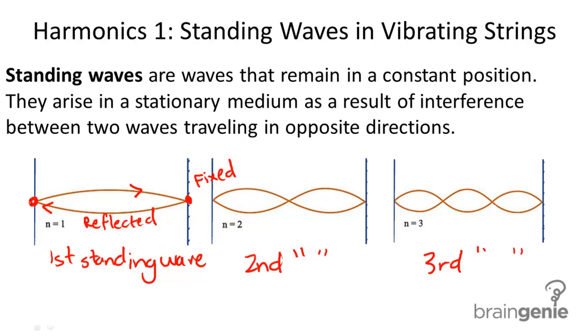A couple of important terms are anything at the equilibrium position, these are called nodes. And then the highest point on the crest of the wave, the highest point, is called an antinode.